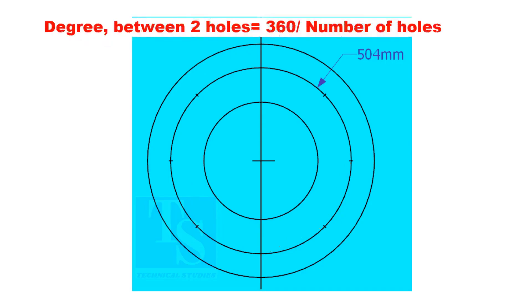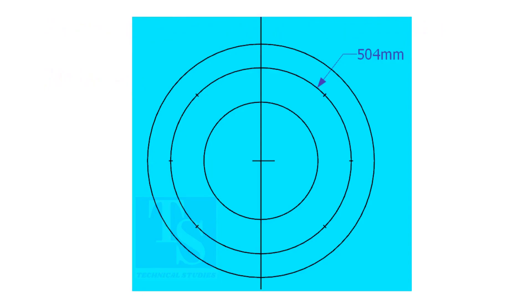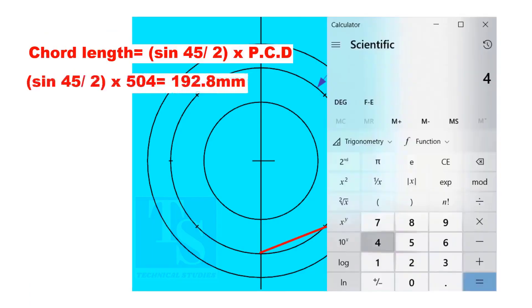If you divide 360 by the number of holes, you will get the angle between two holes. Cord length equals sine 45 divided by 2 multiplied by PCD.